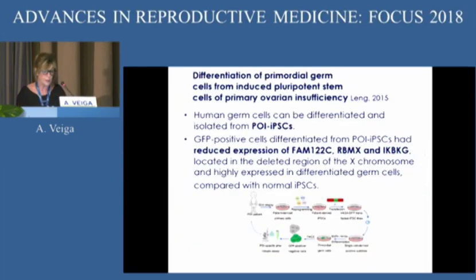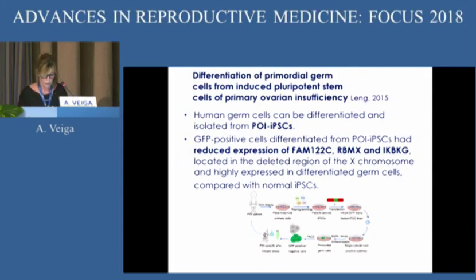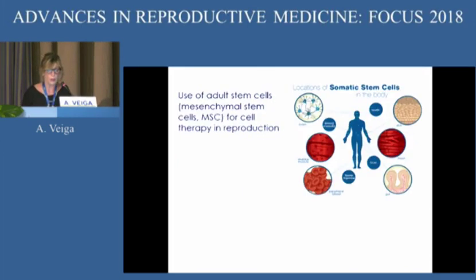In the female, taking cells from primary ovarian insufficiency women, IPS cells were generated, and these cells showed reduced expression of certain genes essential for the production of oocytes. The model works quite well.